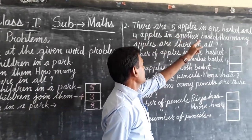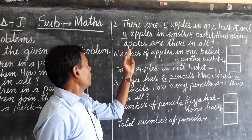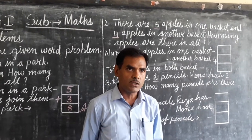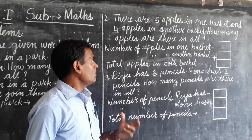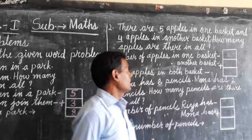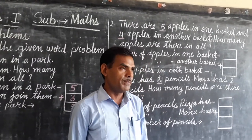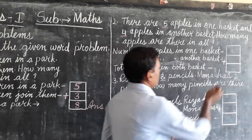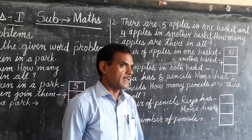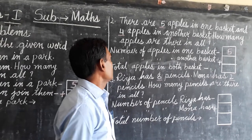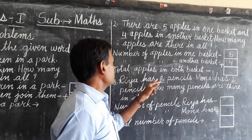There are 5 apples in one basket and 4 apples in another basket. So how many apples are there in all? You write the statement like this. Number of apples in one basket — you write here 5. Then, number of apples in another basket — you write here 4. Total apples in both baskets.